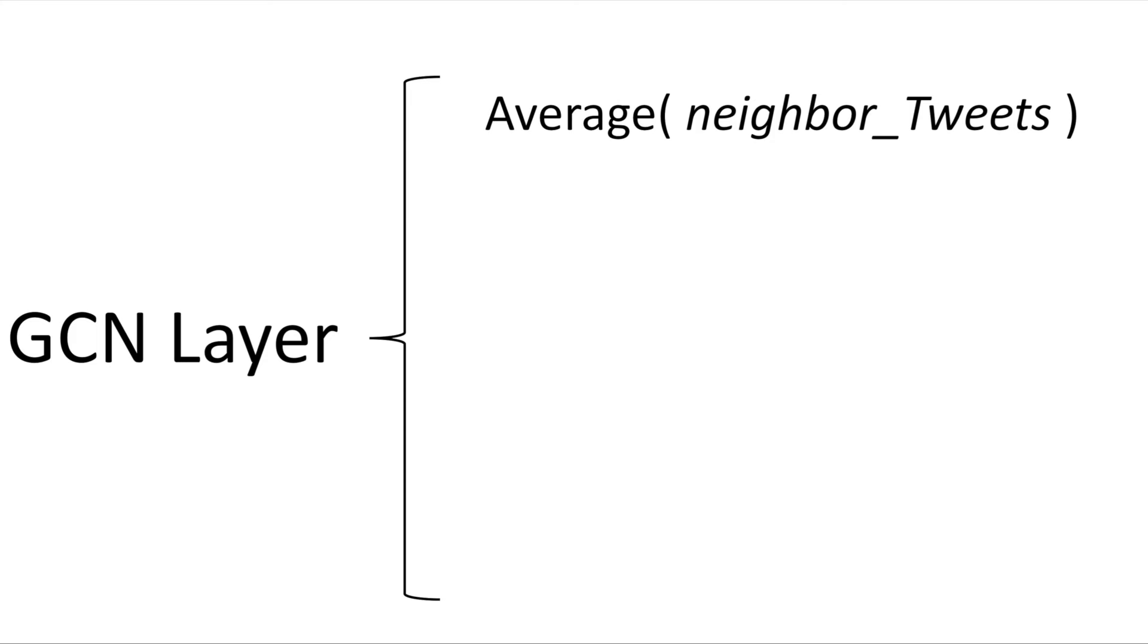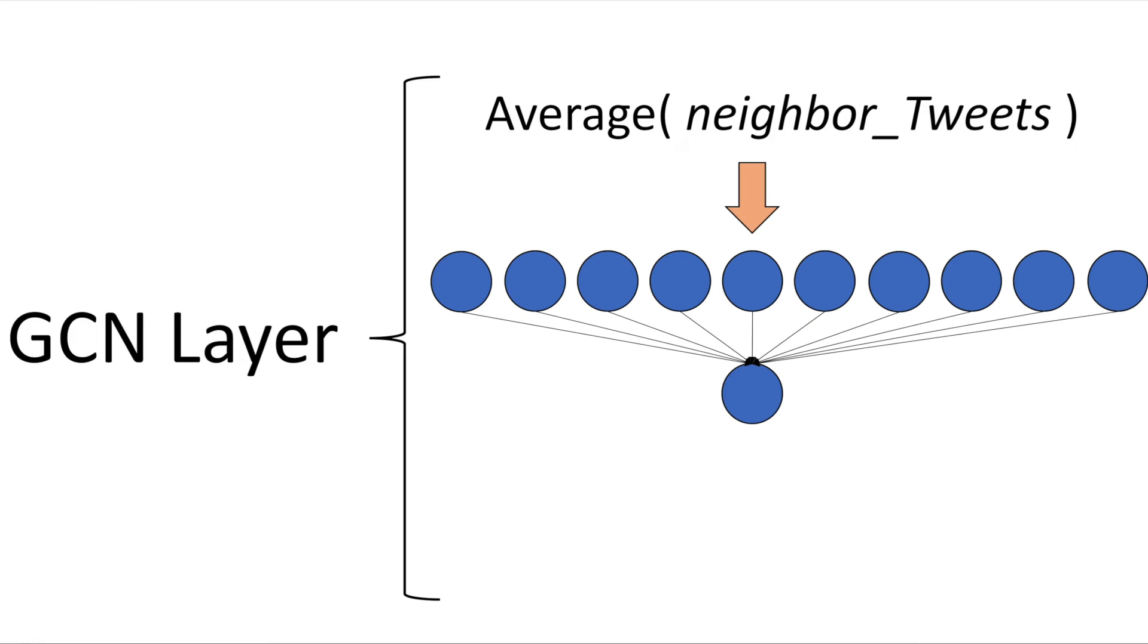For a single layer GCN model, this neighborhood average vector is multiplied by a 10 by 1 weight matrix and then passed through an activation function to result in a single number for each node that corresponds to the probability of that tweet being abusive content. This is effectively the same as using the neighborhood averaging as a preprocessing step, where the output is then used as input to a logistic regression model. First aggregate the neighbors, then pass to a standard neural net.